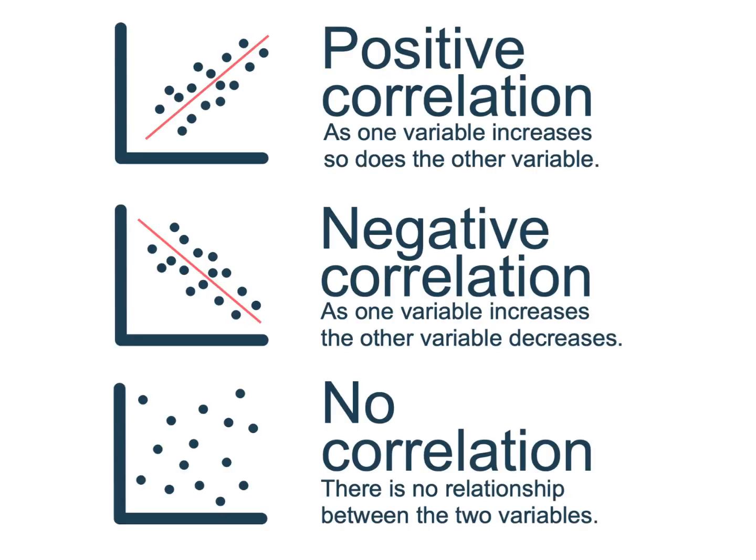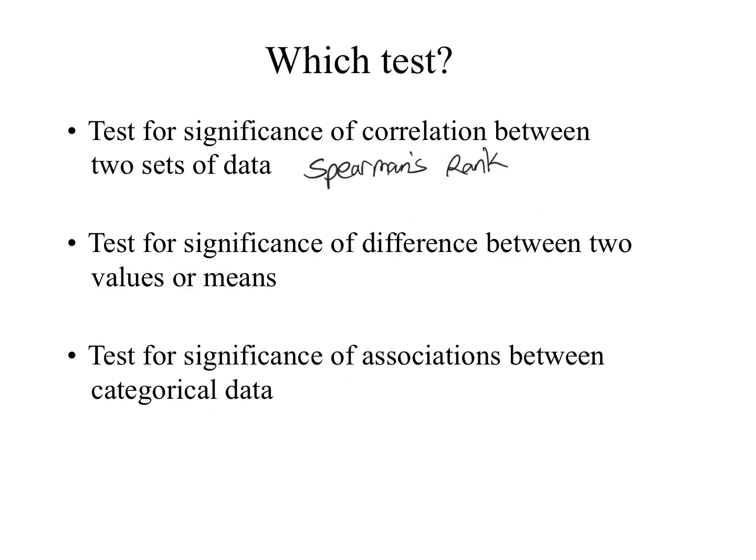At a lower level, you might have looked at scattergrams where you can roughly draw a line of best fit, using that to identify positive correlation, negative correlation, or no correlation. Statistics allows you to put a value on how much correlation there is and compare it with a critical value to say whether the correlation is actually significant. This kind of data would be analysed using a Spearman's rank test.